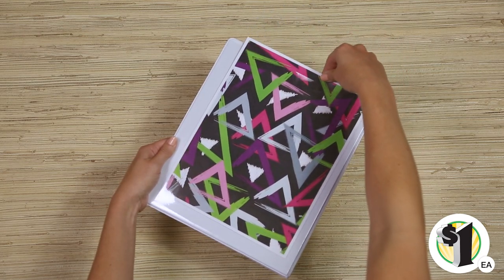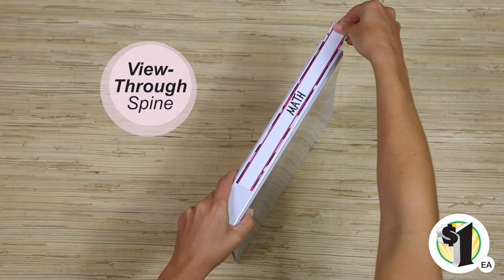Plus, you'll be even more organized with a view-through spine where you can insert a label for each binder.